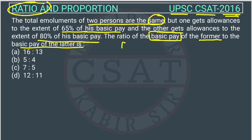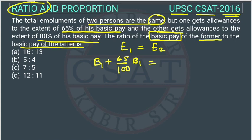The question states that the emoluments of the first person are equal to the emoluments of the second person. Emoluments consist of basic pay plus allowances. Person 1 gets 65 percent of his basic pay b1 as allowances, and person 2 has basic pay b2 plus 80 percent of b2 as allowances.